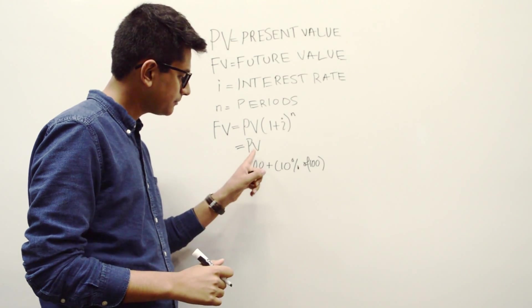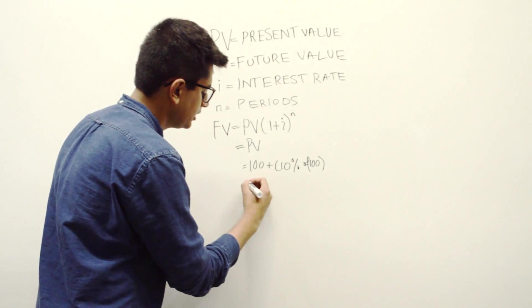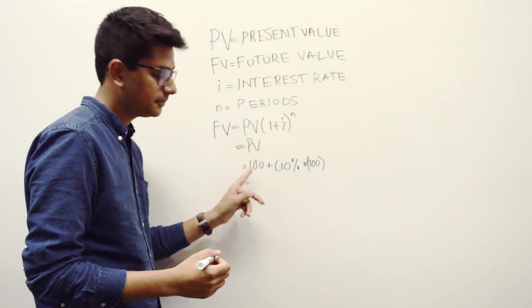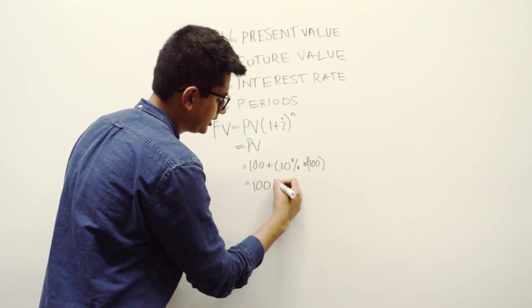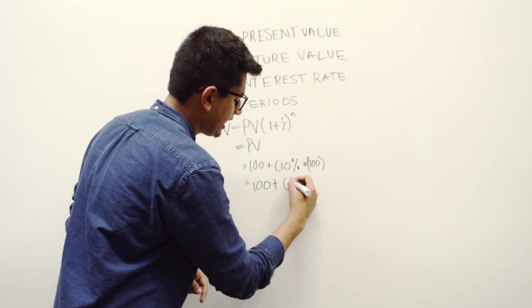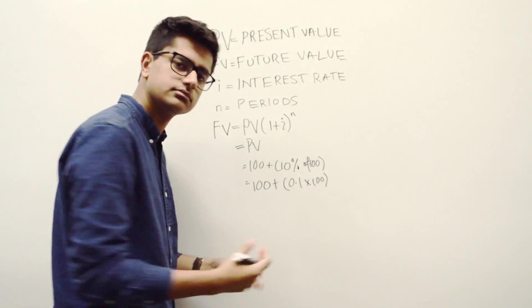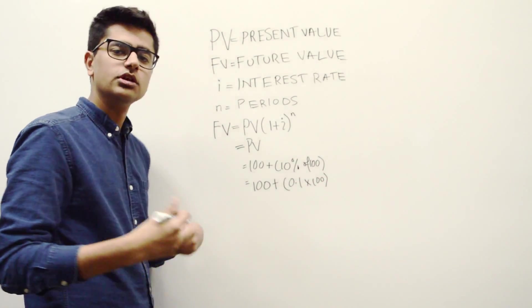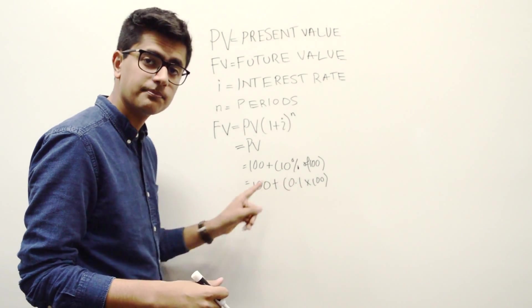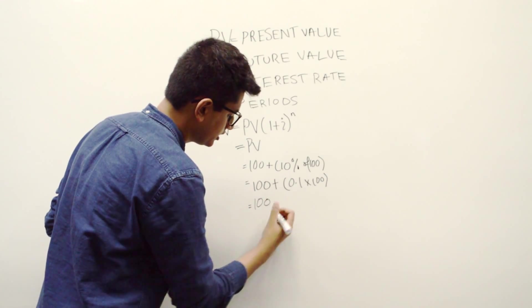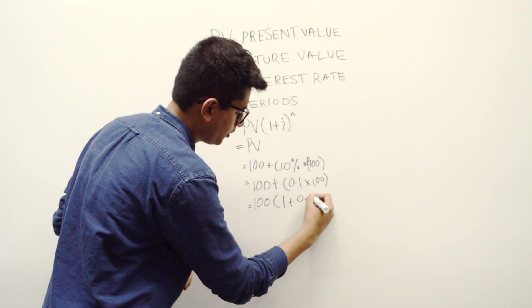At the same time, for the present value formula, you have to write that as 1 plus I, I'll show you why. So basically, $100 plus 10% of $100 can be written as $100 plus 0.1 times 100. Makes sense? And now, doing some basic mathematical manipulation, if you factor out 100 from both these terms, you get 100 times 1 plus 0.1.